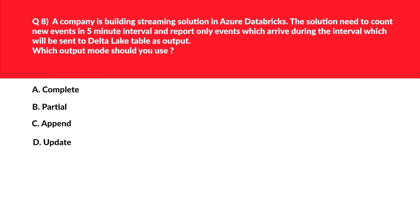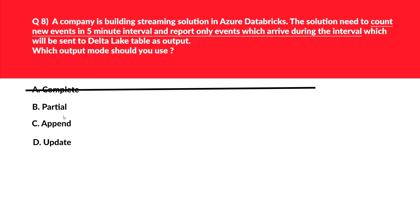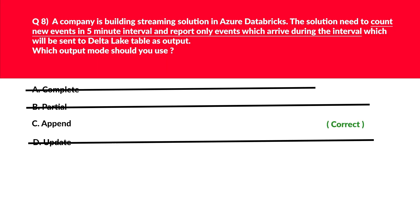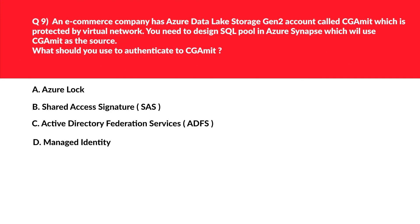Option A — complete mode — the entire result table is written to external storage, which we don't require as per the question, so it's incorrect. Option B — partial — there's no output mode called partial; it's an invalid option. Option C — append — in append mode only new rows get appended to the result table, which matches our requirement. Option D — update — outputs only the rows which changed since the last trigger, which is an incorrect choice. We'll lock C, append, as the correct answer.